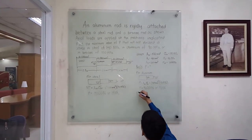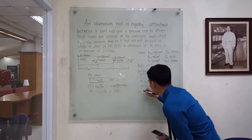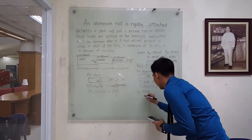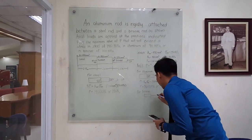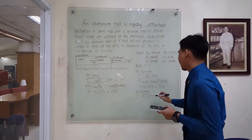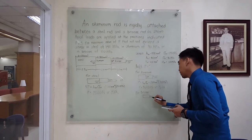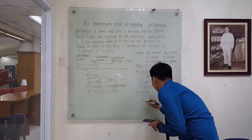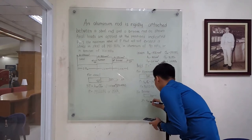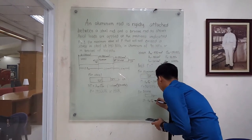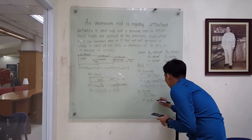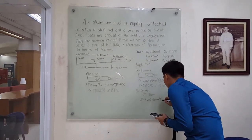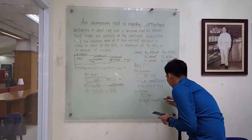Lastly, for the bronze, the only force acting on the bronze is 2P. So 2P is equal to the area of the bronze times the stress of the bronze, which is equal to 200 square millimeters times 100 MPa.